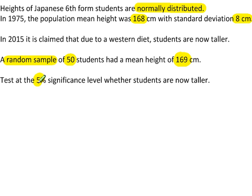We're using a 5% significance level to carry out a hypothesis test. So the population mean is 168. The standard deviation was 8, so the variance will be 8 squared, or 64.